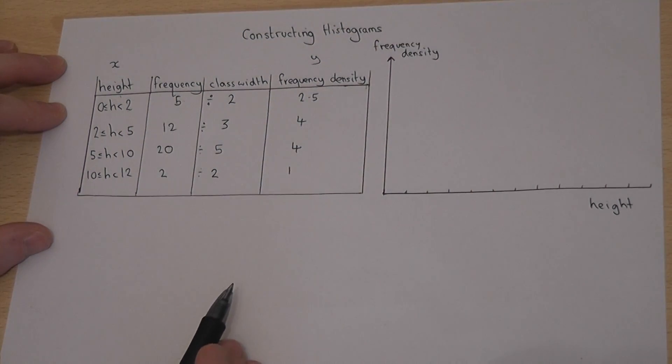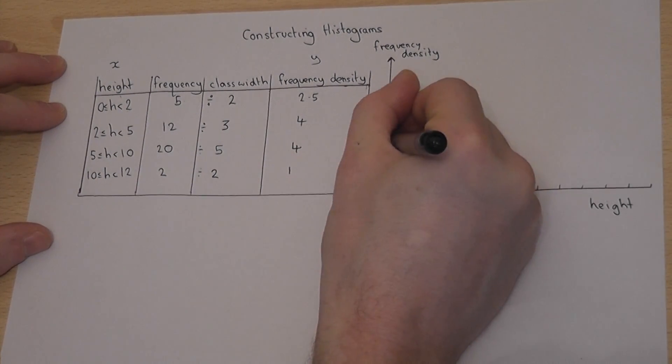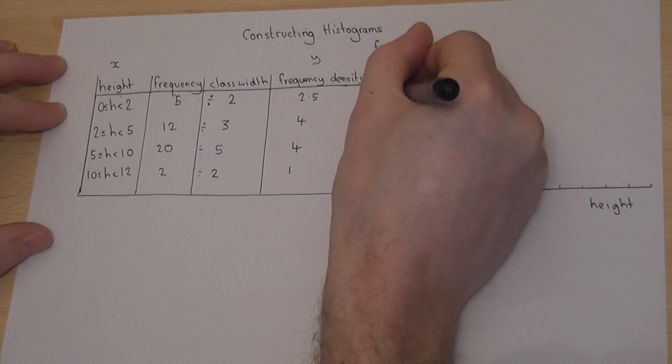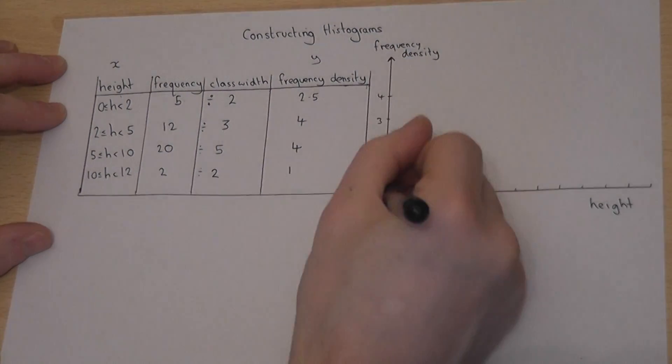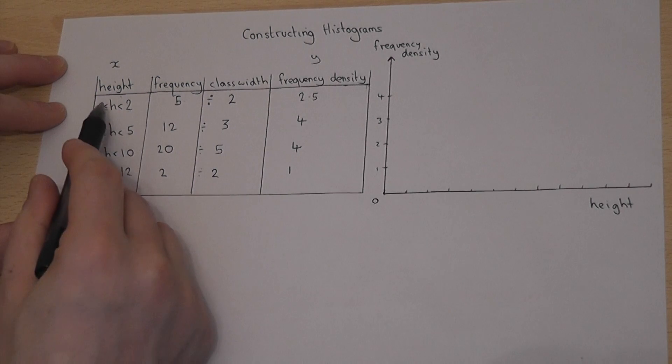The y-axis must go from 0 up to 4. So 1, 2, 3, 4, a nice regular scale there. The x-axis is a proper scale as well. So 0 to 12,